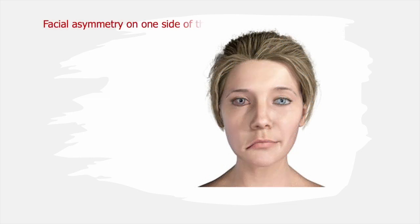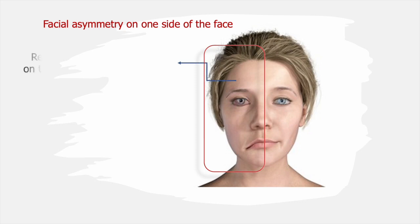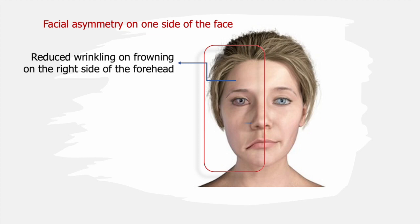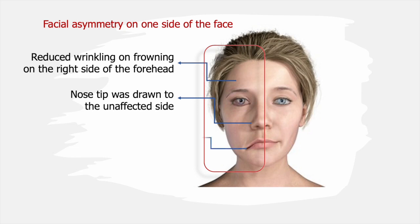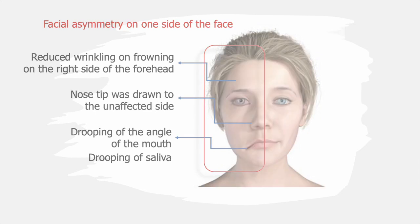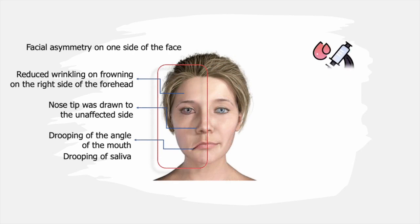Let's begin the session with a case report. A 37-year-old female reported to the clinic with characteristic facial asymmetry with various facial expressions on the right side. Personal and medical history was non-contributory. Clinical examination showed obvious disfiguring facial asymmetry with facial expressions. Upon assessment of the cranial nerves, reduced wrinkling on frowning of the right side of the forehead was noted. The nose tip was drawn to the left side. When attempting to close the eyes, the patient could not close the affected eye completely, with epiphora in the right eye. On smiling and puffing the face, there was decreased activity of the muscles on the right side compared to the left, with drooping of the angle of the mouth and drooling of saliva from the right side mouth corner.